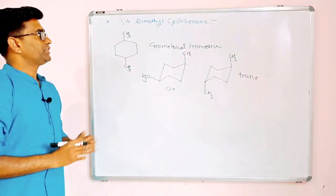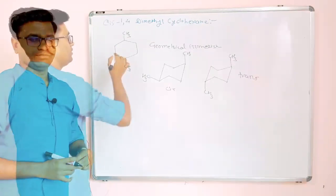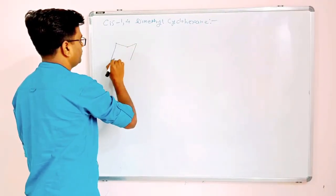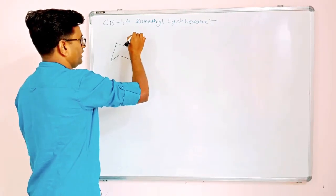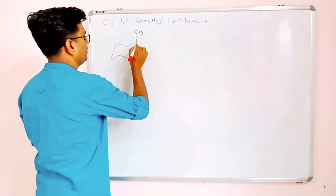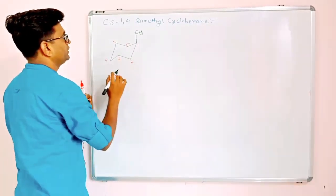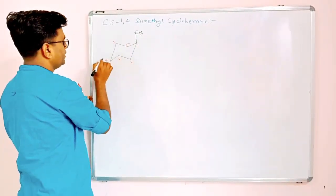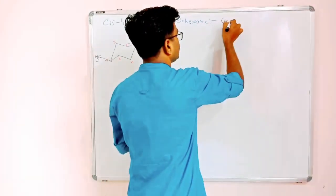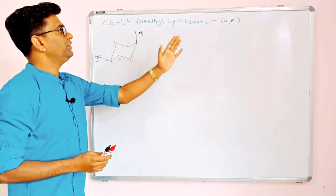Now we will see the stereochemistry of cis and trans isomers. We start with cis-1,4-dimethylcyclohexane. For writing the structure, write the methyl first, then carbon number 1, 2, 3, 4, 5, and 6. In cis form, both methyls are on the same side. So one methyl is axial and the other becomes equatorial. This form is called axial-equatorial cis-1,4-dimethylcyclohexane.